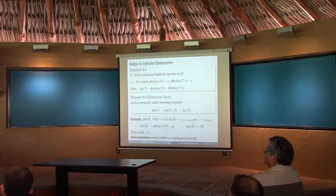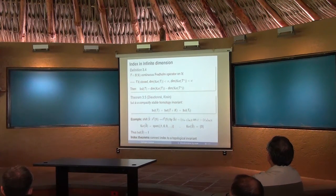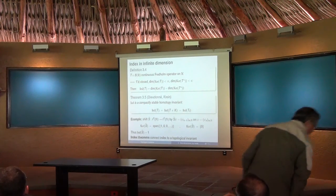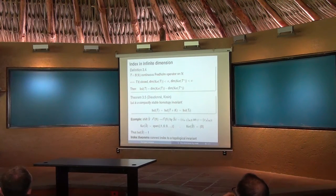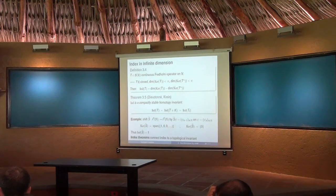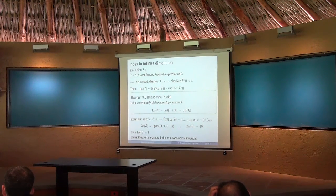The second important property of the index is that it's stable under compact perturbations: you can add to the Fredholm operator a compact operator and it doesn't change the index. What is a compact operator? You can think of adding a finite rank operator, which is definitely a compact perturbation. Compact operators in general are limits of finite rank matrices where the limit converges in the operator norm topology.